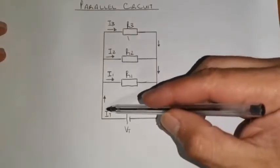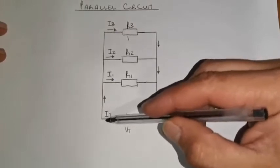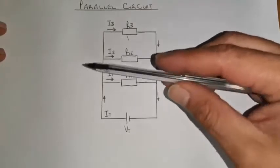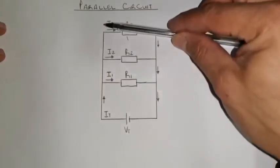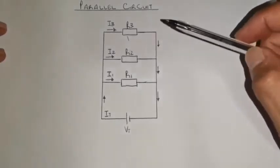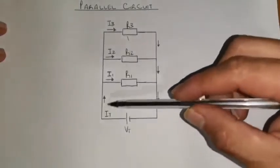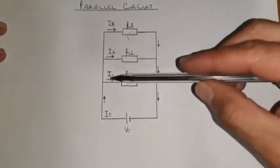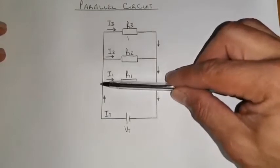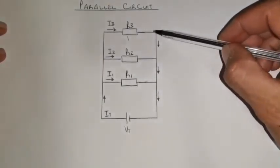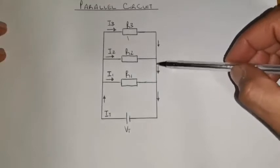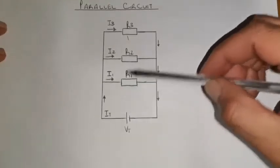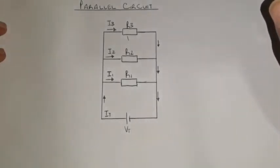So meaning that I have a total current. I have I1, I2, and I3, which I can see splitting in different branches. Kirchhoff's current law says that current entering a point is going to be the same when that current leaves that point. So if this current splits from I total into the branches, it's going to be the same when it comes to the other side — meaning when it gets to that point it's going to be my total current again.